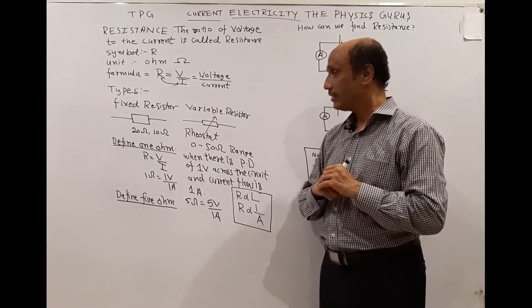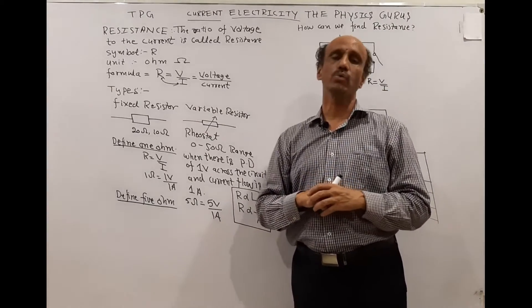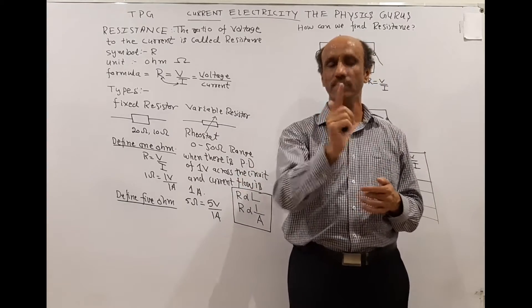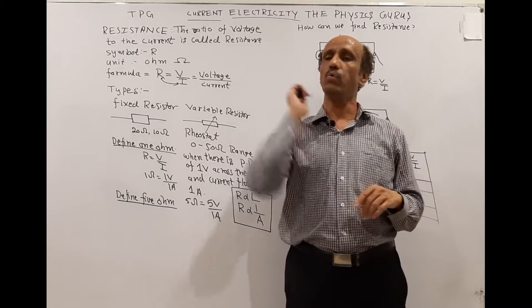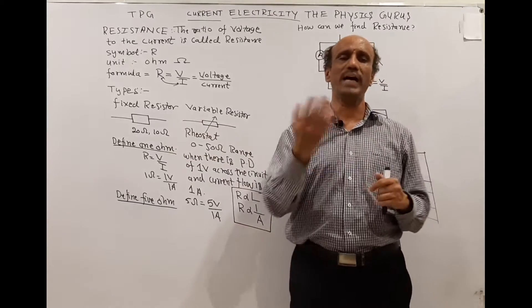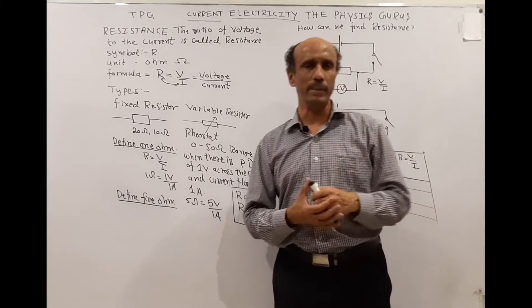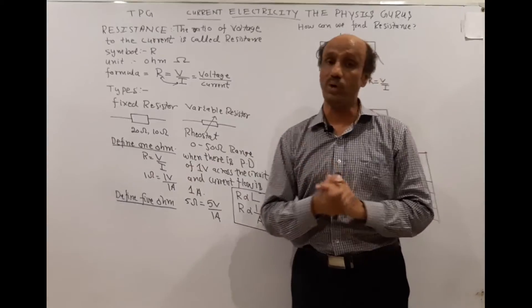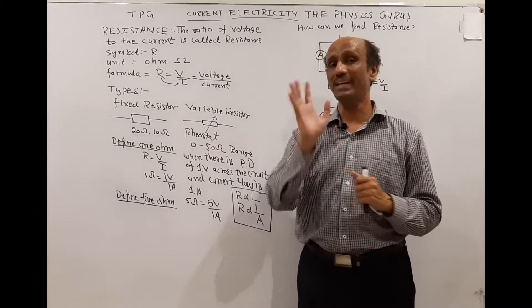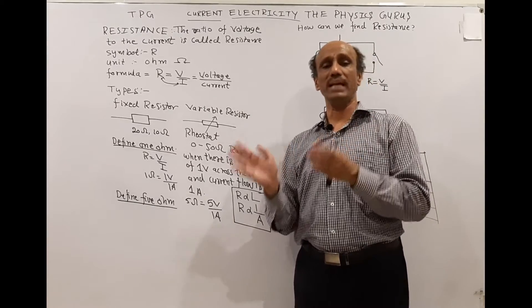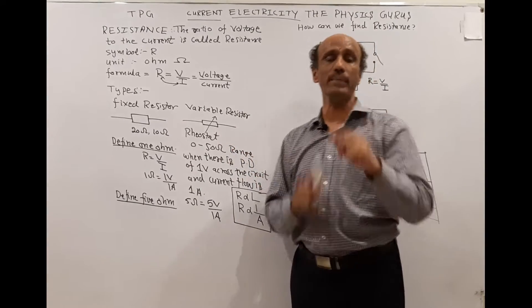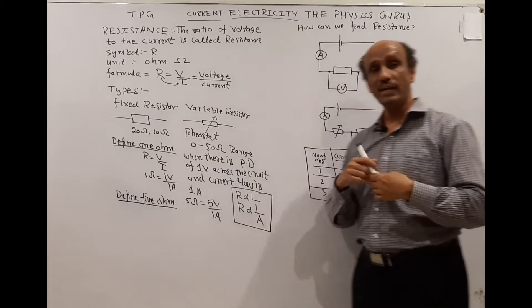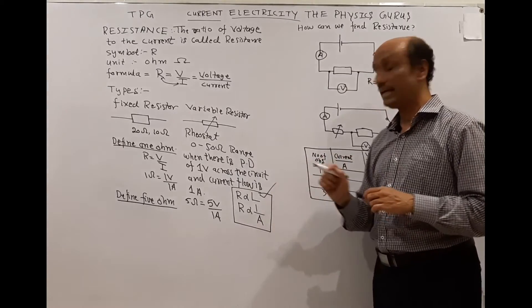One ohm is defined using R = V/I: 1 ohm equals 1 volt over 1 ampere. So when there is a potential difference of 1 volt across the terminals of a circuit and the current flowing is 1 ampere, the resistance is 1 ohm. Similarly, 5 ohms is defined as when a 5 volt potential difference is set up across the terminals and the current is 1 ampere, since 5 divided by 1 gives 5.